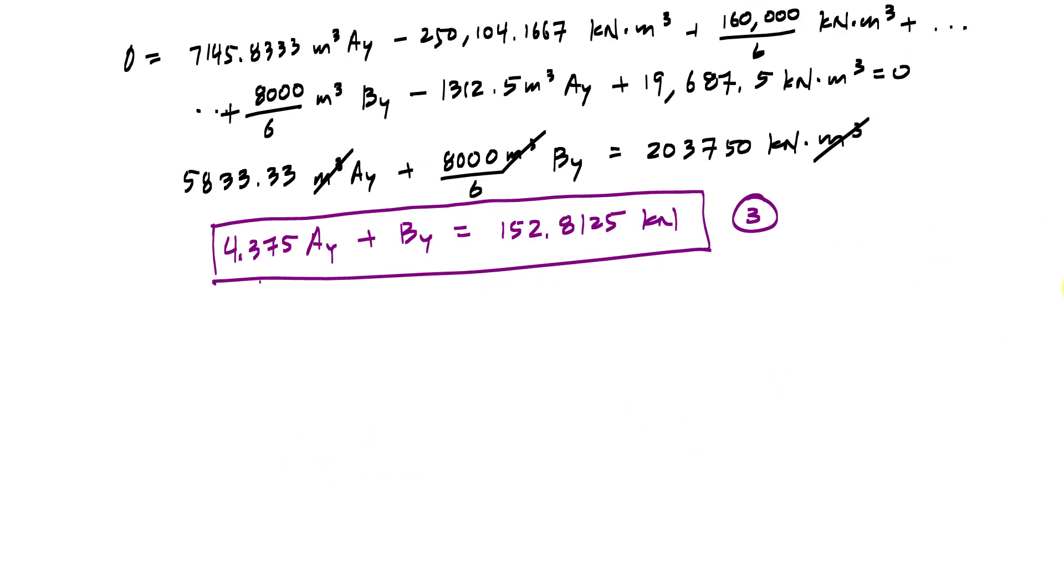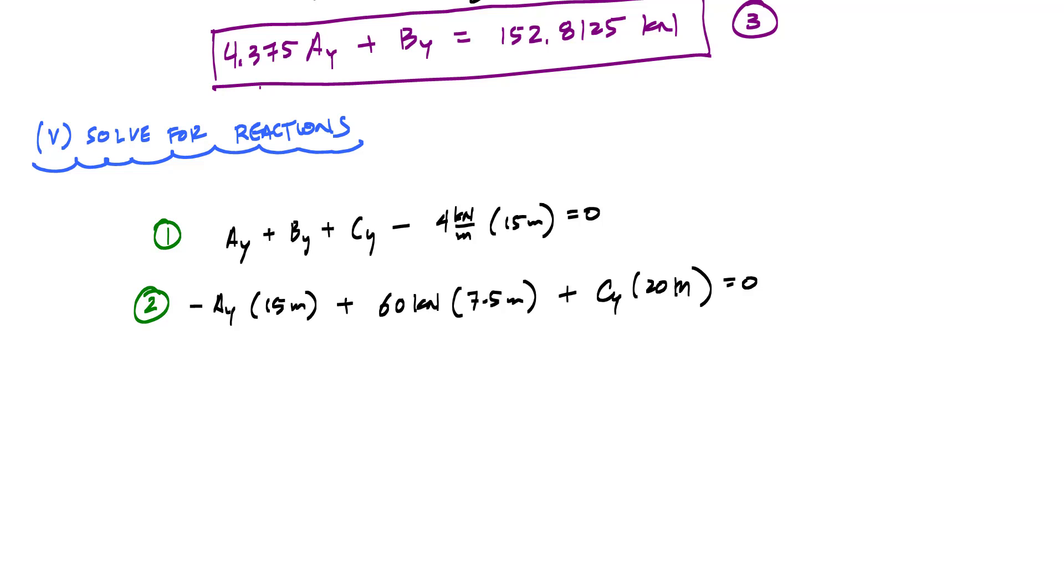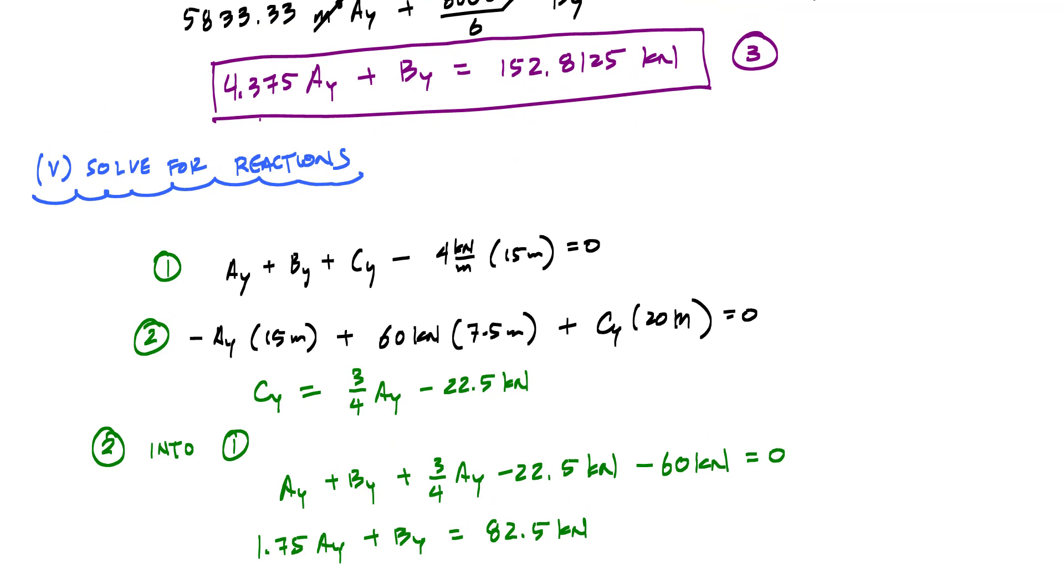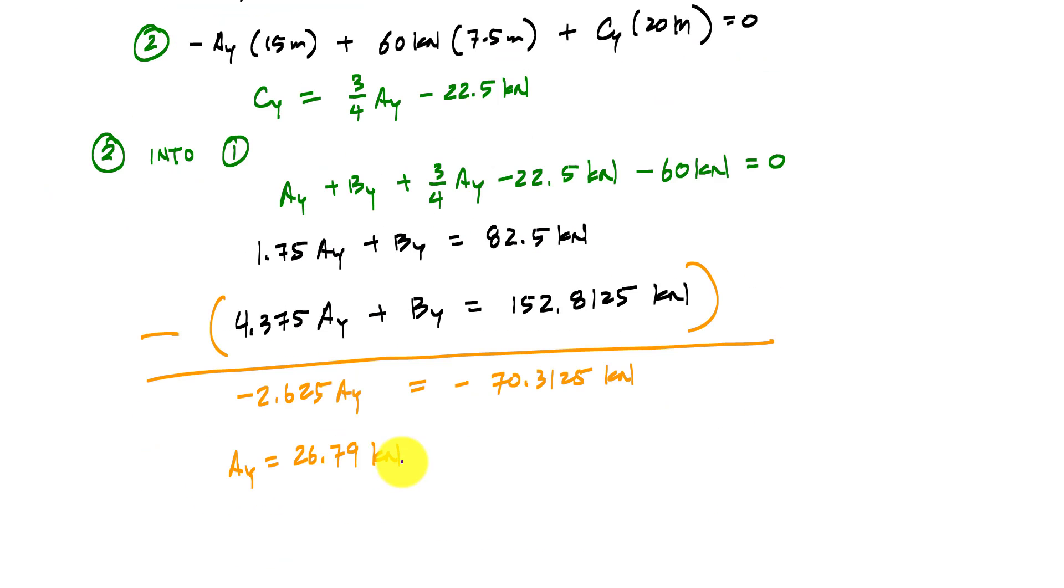Now I'm going to use this equation with my equilibrium equations and solve for my unknown reactions. So I'll bring my equilibrium equations down. I'll manipulate two, substitute two into one. This will give me. And now using three and this new equation, solve for the unknowns. So I get Ay is 26.79. Go back and I plug it into any of my equations and I'll get that By is 35.62 kilonewtons. And if I substitute those back into one of my equilibrium equations, I will get that Cy is negative 2.41 kilonewtons.